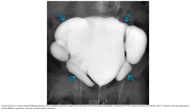VCUG in a 3.5-year-old with Menkes disease showing a moderate to large diverticulum positioned above the bladder, characteristic of this connective tissue disorder. Other CT findings with this appearance include Ehlers-Danlos Syndrome and Cutis Laxa.